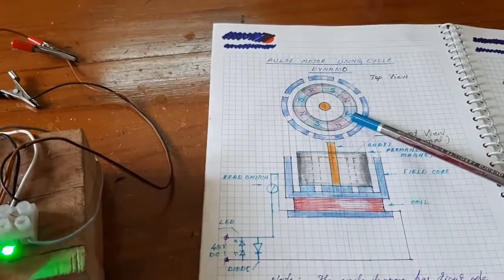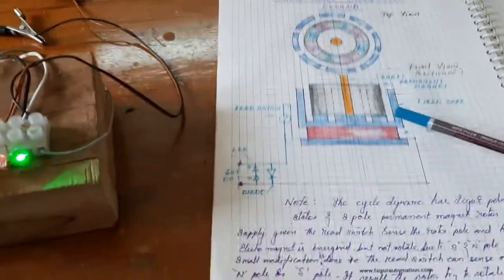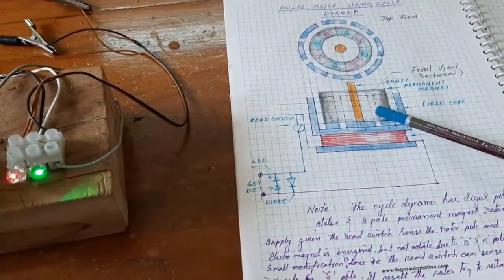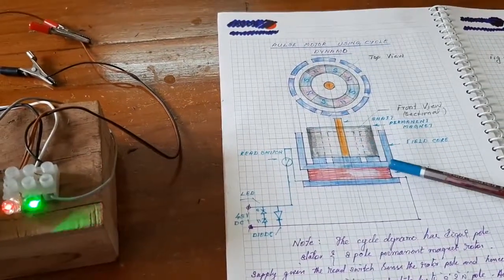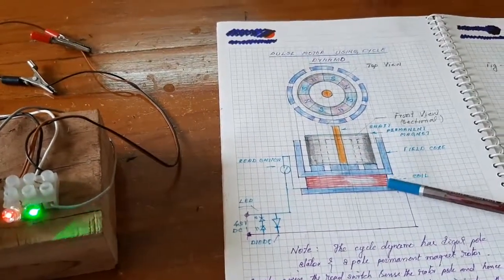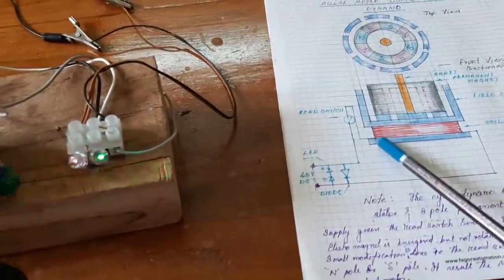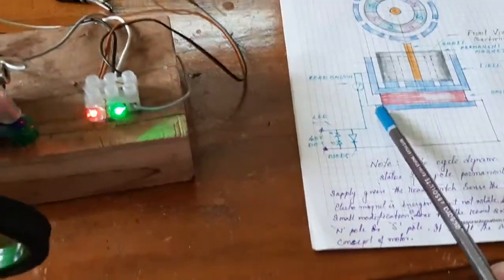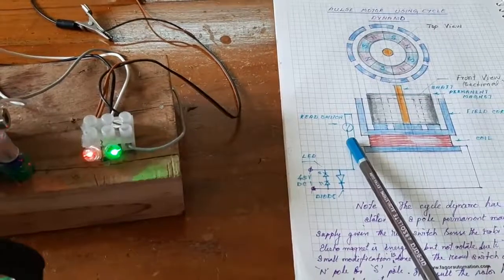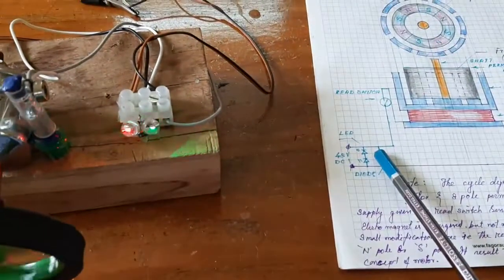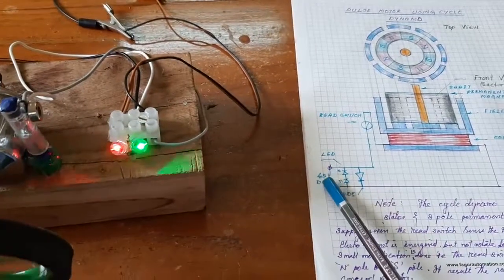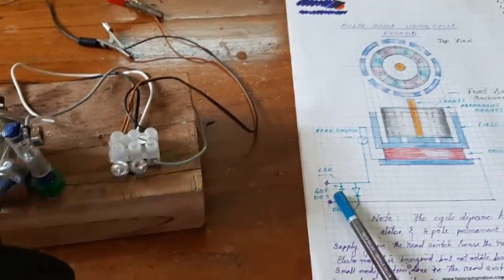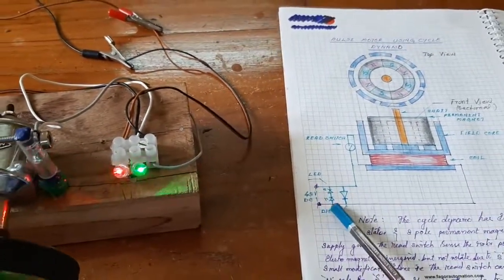Here, this is the permanent magnet rotor with eight poles, and this is the electromagnet with the winding. In the circuit diagram, one lead is connected to the reed switch and connected to a surge diode and LED. A 4.5 volt DC source is given.